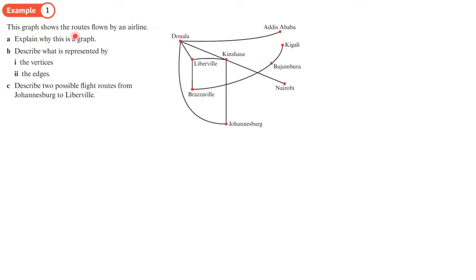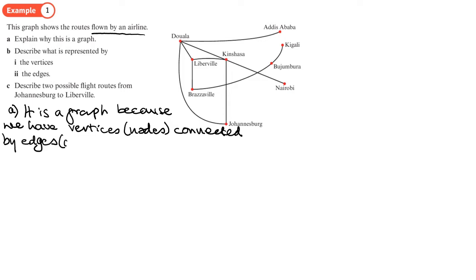So here we've got a graph. It shows the routes flown by an airline. So what we've got here are different towns, and the edges here or arcs represent the flights between different towns. Now, in part A, we need to describe why this is a graph. Well, it's a graph because I have vertices or nodes connected by edges or arcs.